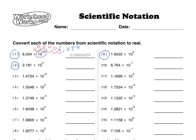Let's try number 9. So here we have 1.6022 times 10 to the 6. We're going to multiply it times 10 six times — 1, 2, 3, 4, 5, 6. Here's where the decimal place will end up. We have to add in two placeholder zeros. So our final result is 1,602,200. And we should add in commas.